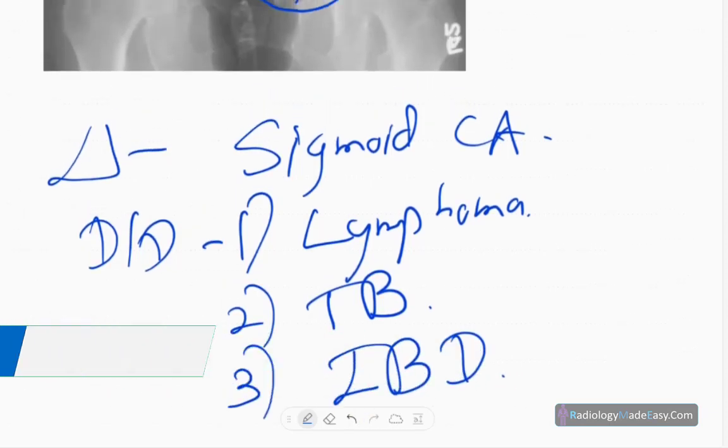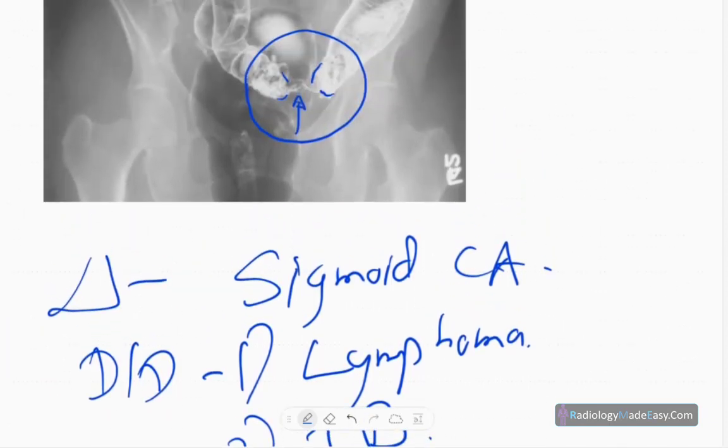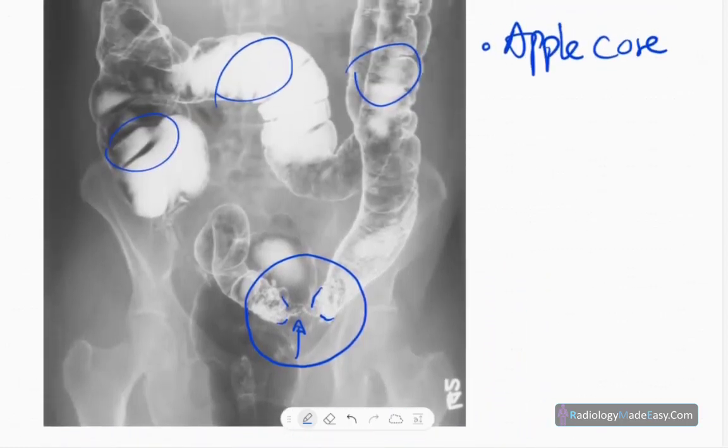But in this case, there is irregularity in the stricture wall, so it's more towards malignancy. The next investigation is contrast-enhanced CT abdomen to find out the local spread of the disease and also find out distant metastasis. You can also see synchronous lesions elsewhere in the bowel. So that concludes case number 24 in GIT contrast studies.